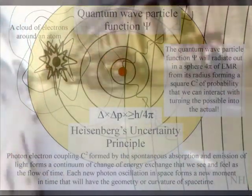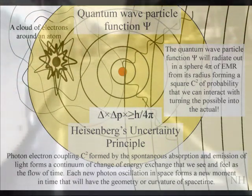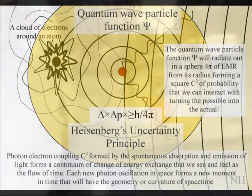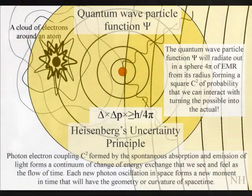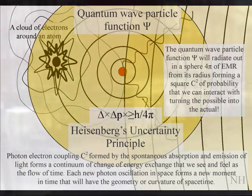We can ask ourselves what the smallest energy level would be that would form a base for this process. The logical answer is that photon energy is at the heart of this process. Therefore each new photon oscillation or vibration represents a new moment in time and space.